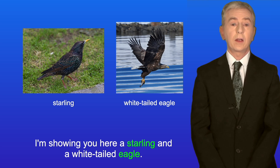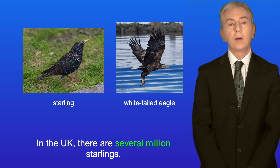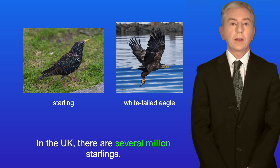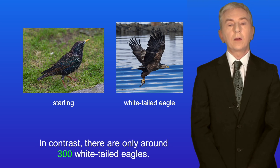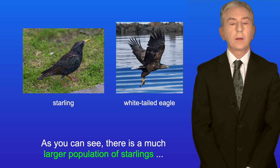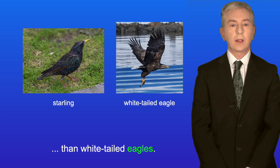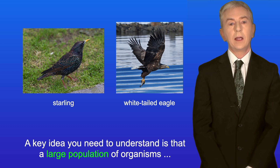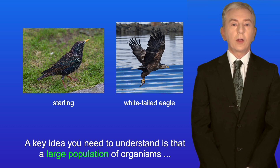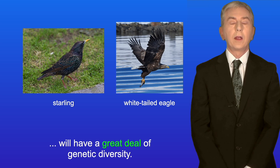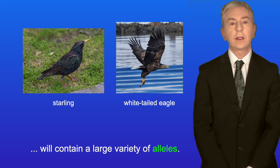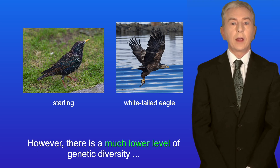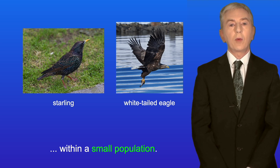Here is a starling and a white-tailed eagle. In the UK there are several million starlings, whereas there are only around 300 white-tailed eagles. A large population will have a great deal of genetic diversity — the gene pool will contain a large variety of alleles. However, there is a much lower level of genetic diversity within a small population.